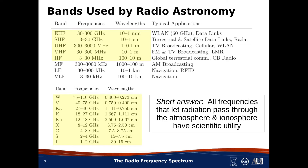A fair question now is what bands are used by radio astronomy. A fair response is that there's astrophysical information available in every band. However, only frequencies above about 3 MHz can be accessed from the ground — below that, the Earth's ionosphere effectively becomes opaque to radio frequencies. Frequencies below 100 MHz, or in some applications below 300 MHz, are difficult to use because of the ionosphere. A similar problem occurs in the SHF band and higher, where certain frequencies are blocked by atmospheric absorption. Radio astronomy uses all frequencies that allow radiation to pass from space to the ground, and it can also be done from space where those limitations do not apply.